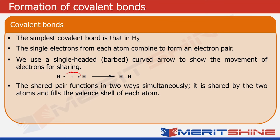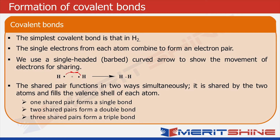If you look at these hydrogen atoms separately, each has acquired an extra electron needed to achieve the nearest noble gas configuration of helium. If we have one shared pair of electrons, it forms a single bond. If we have two shared pairs, it forms a double bond. And if we have three shared pairs, we get a triple bond.